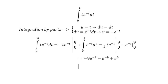So we get minus 10 e to the power of minus 9 plus 1, and this is the final answer.